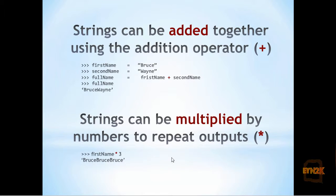We can also repeat outputs such that we can multiply the string by a number, such that if we got first name times 3, we will get Bruce Bruce Bruce.